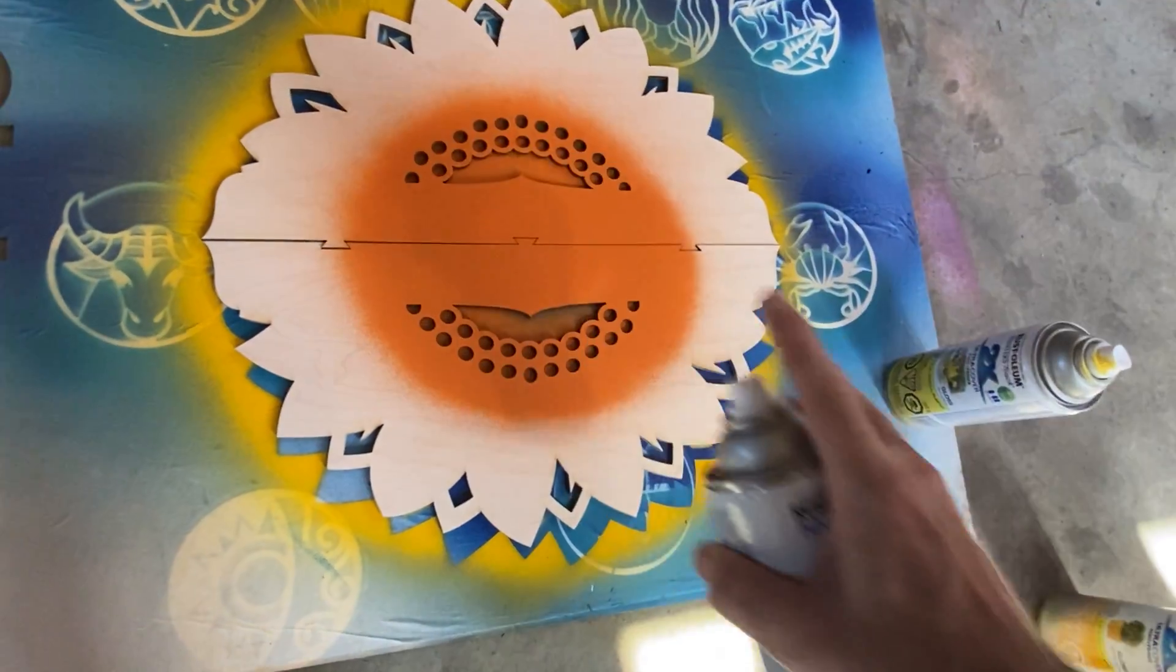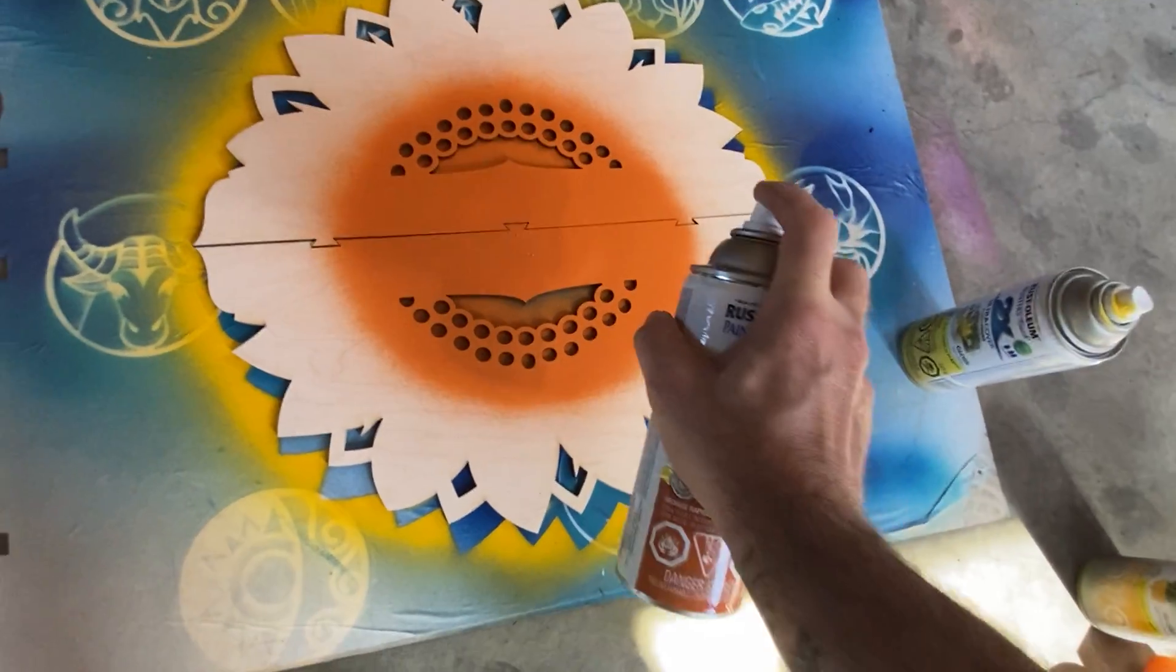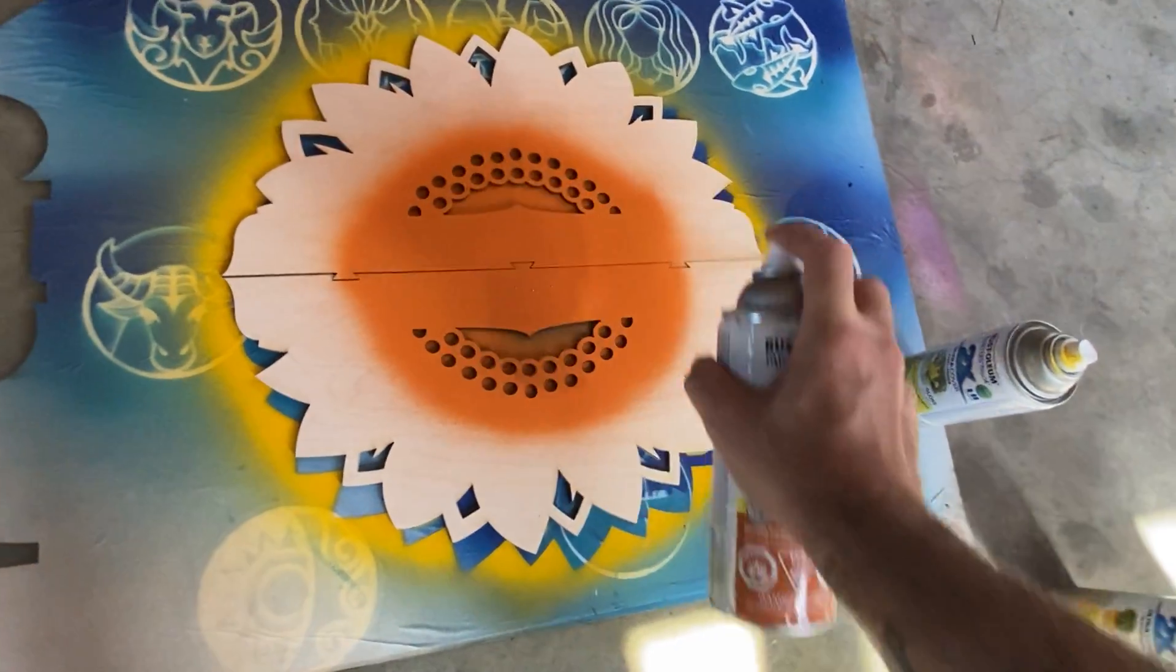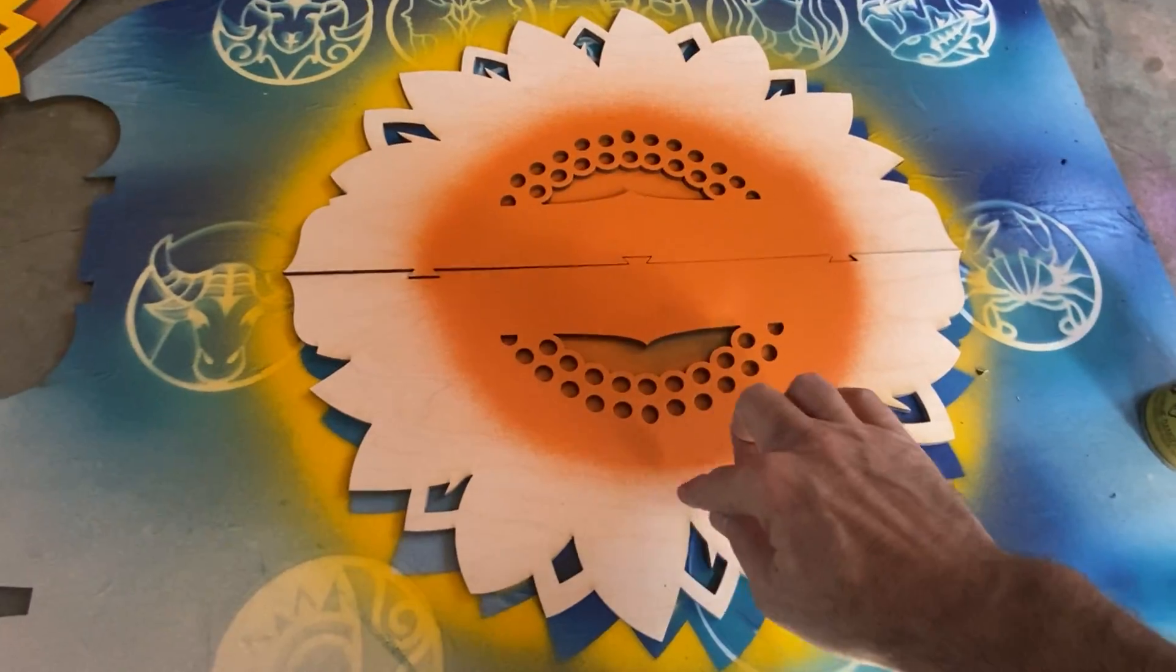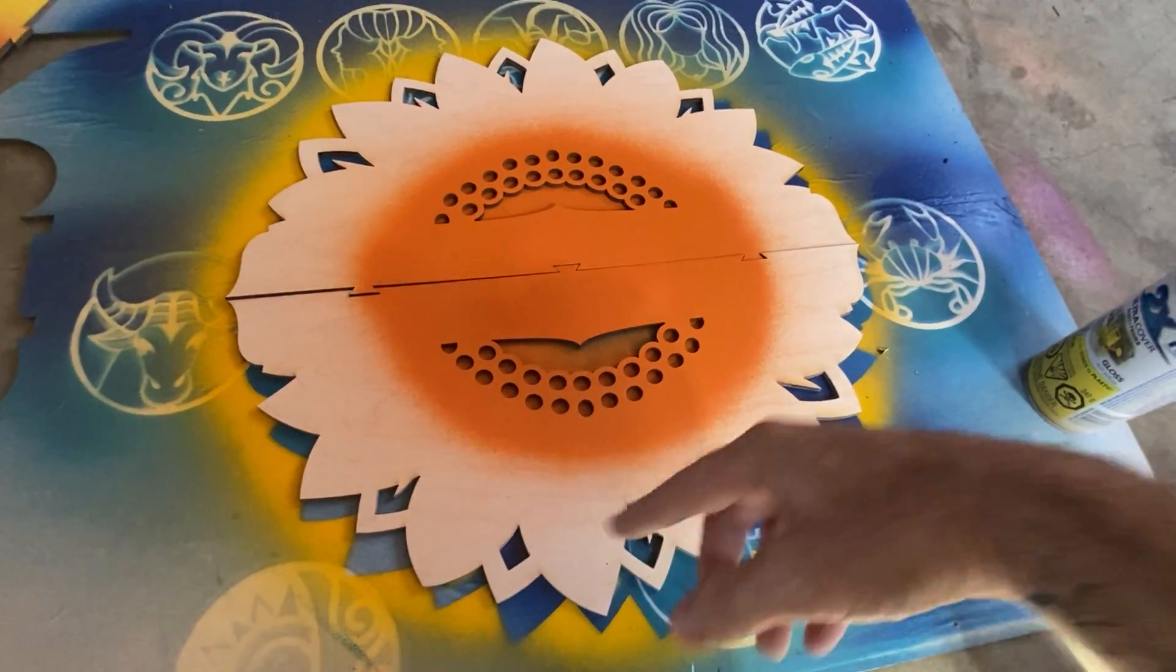I'm going to overspray just a little bit off the edges. So I've oversprayed down because the leaves and petals come up, so I want to show a little bit of that.